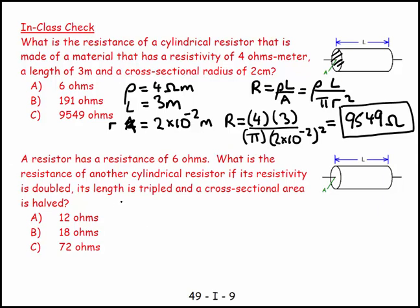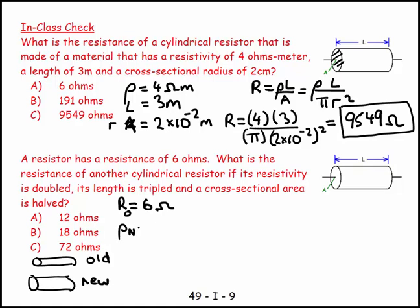A resistor has a resistance of 6 ohms. So this is going to be R equals 6 ohms. What is the resistance of another cylindrical resistor if the resistivity is doubled, the length is tripled, etc. So I can basically compare an old version with a new version. And I know that R old equals 6, but I don't know what R new is. I know that resistivity new equals resistivity is doubled, equals 2 times resistivity old. I know that length new is 3 times length old. And I know that area new is a half of area old.